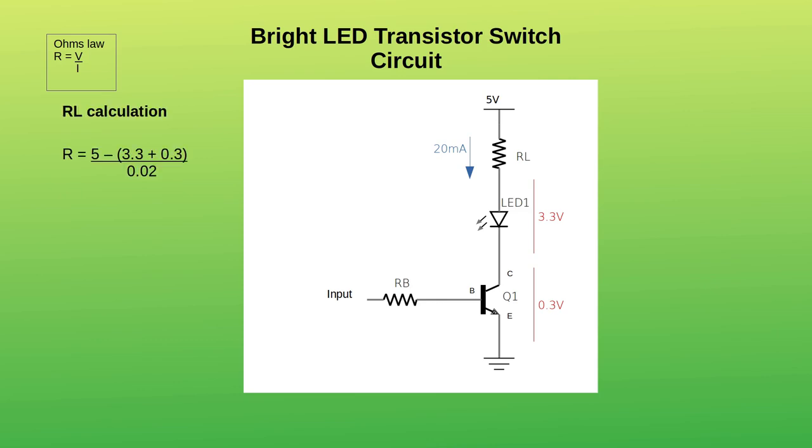If we plug those values into the formula, the voltage across the resistor is the supply voltage at 5 volts, minus 3.3 for the voltage across the LED and 0.3 across the transistor. This is divided by the current of 20 milliamps, which is 0.02 amps. This gives the value of 70 ohms.